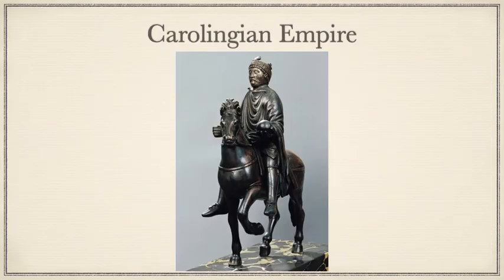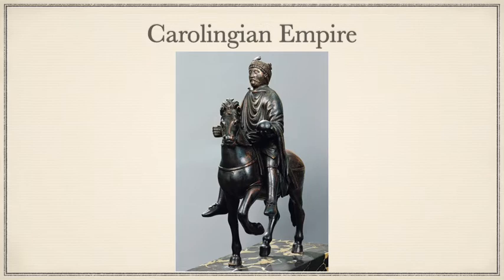Next we move to the Carolingian Empire. On Christmas Day in the year 800, Pope Leo III crowned Charles the Great — Charlemagne — as the first holy, meaning Christian, Roman Emperor. This purposely took place at St. Peter's Basilica in Rome. Charlemagne consolidated the Frankish kingdom of his father and grandfather, defeated the Lombards in Italy, and laid claim to reviving the glory of the Roman Empire — called the Carolingian Renaissance. His official seal bore the phrase Renovatio Imperii Romani, meaning the renewal of the Roman Empire.